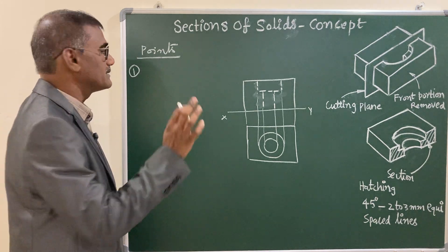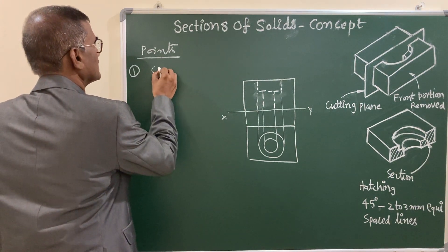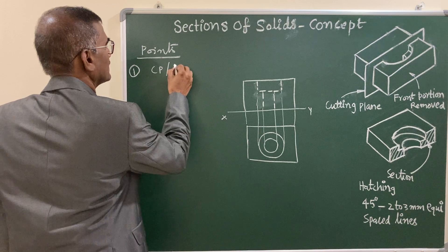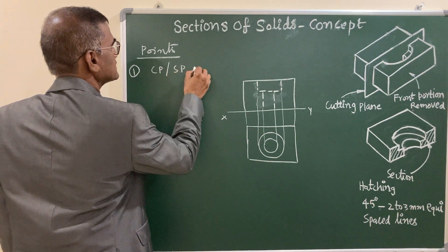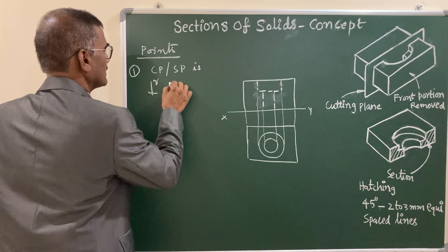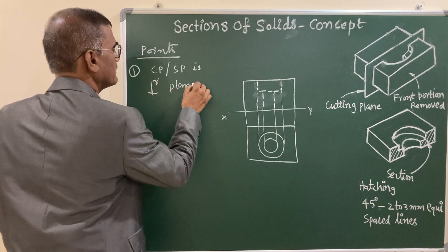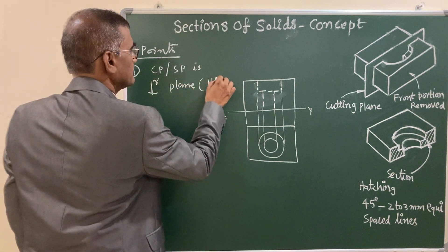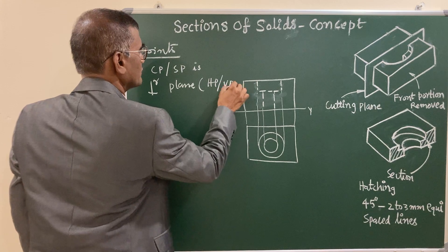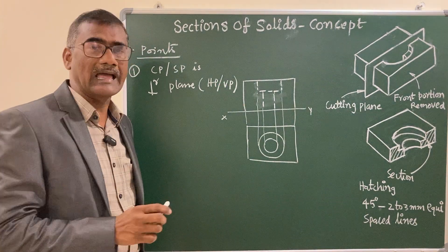The cutting plane is a perpendicular plane. It may be perpendicular to HP, or it may be perpendicular to VP. Since it is a perpendicular plane, it appears as a line.